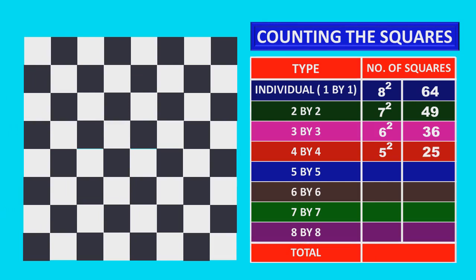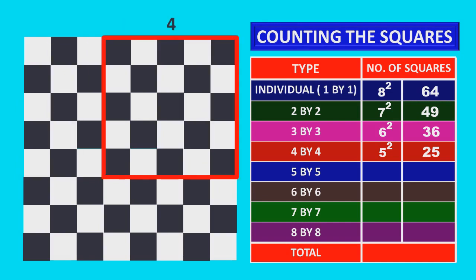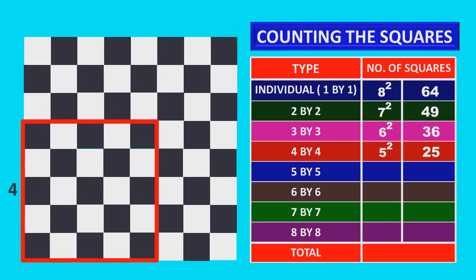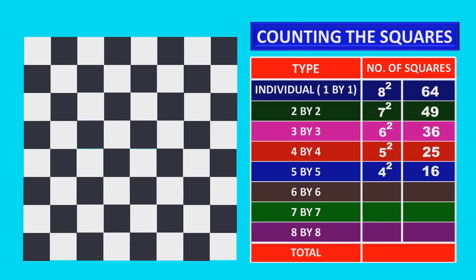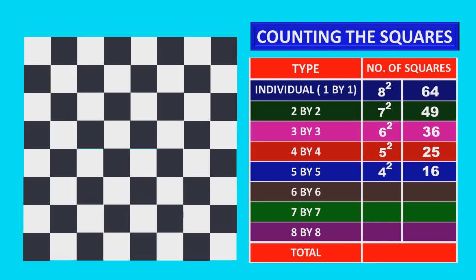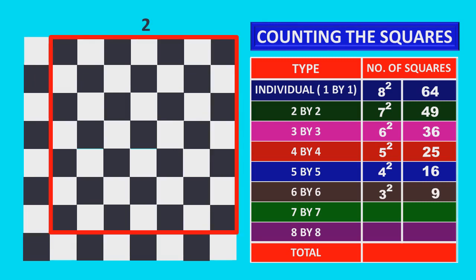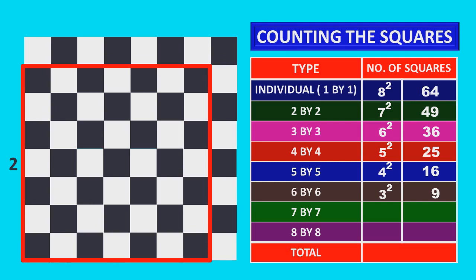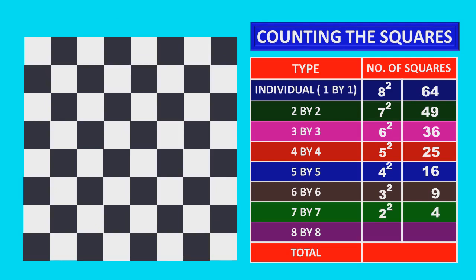Now, 5 by 5 squares. Now, 6 by 6: 3 columns and 3 rows. So, 3 squared is equal to 9 squares. Now, 7 by 7: 2 columns and 2 rows. So, 2 into 2 is equal to 4 squares.